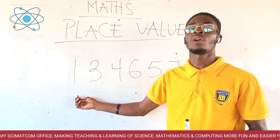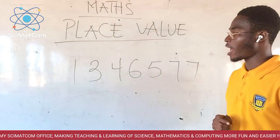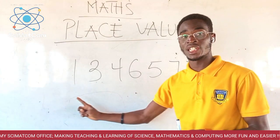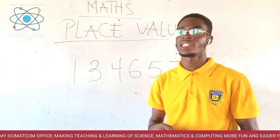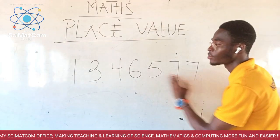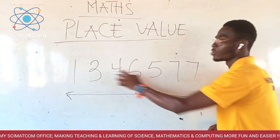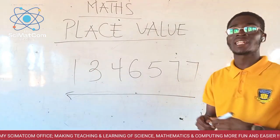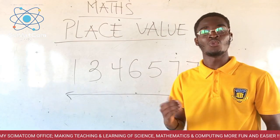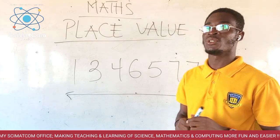We are going to look at the place of each of the digits in this particular figure. After we have gotten the places, we are going to state the value of the digits. Starting from right to left, we can start identifying the place of each number using ones, tens, hundreds, thousands and the rest. So let us begin.